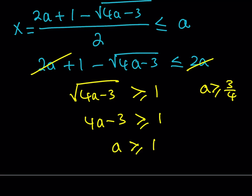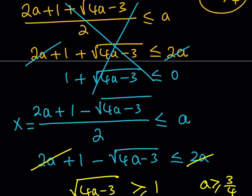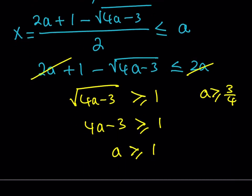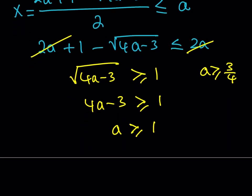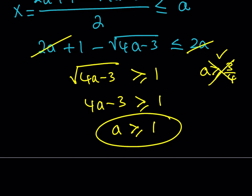For the x ≤ a condition to be satisfied, a must be greater than or equal to 1. We also needed a ≥ 3/4 for the radical to exist, but a ≥ 1 already covers that. So we don't need to worry about the 3/4 condition separately. This means we can now write the solution set — and since this is an equation with a parameter, we write the answer case by case.